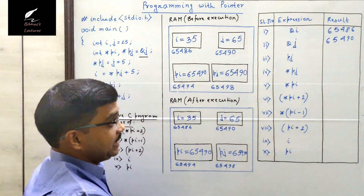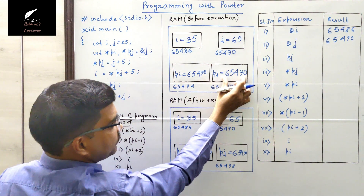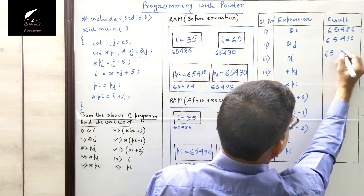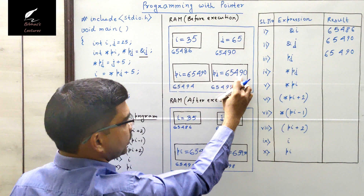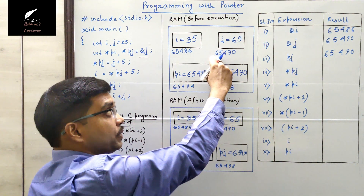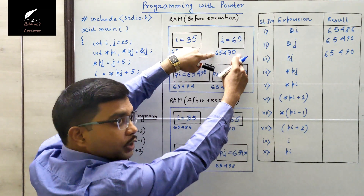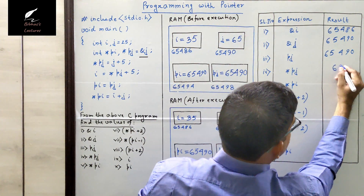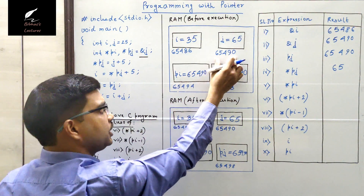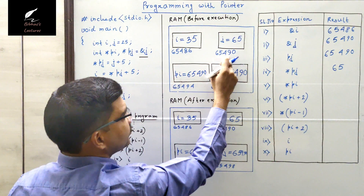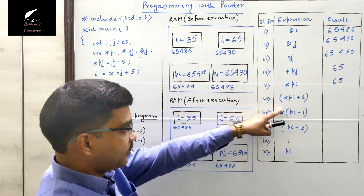Next is pj. pj is a pointer and its value is 65490. Number four is asterisk pj: pj is 65490, and asterisk pj means the value present at that address, which is 65. So asterisk pj equals 65. Similarly, asterisk pi — pi's value is also 65490 — so asterisk pi also gives the value at 65490, which is 65.